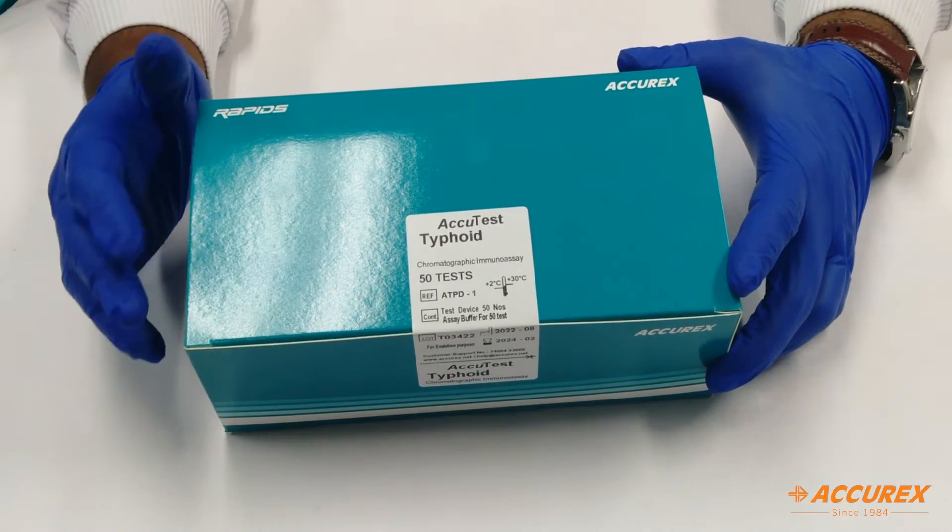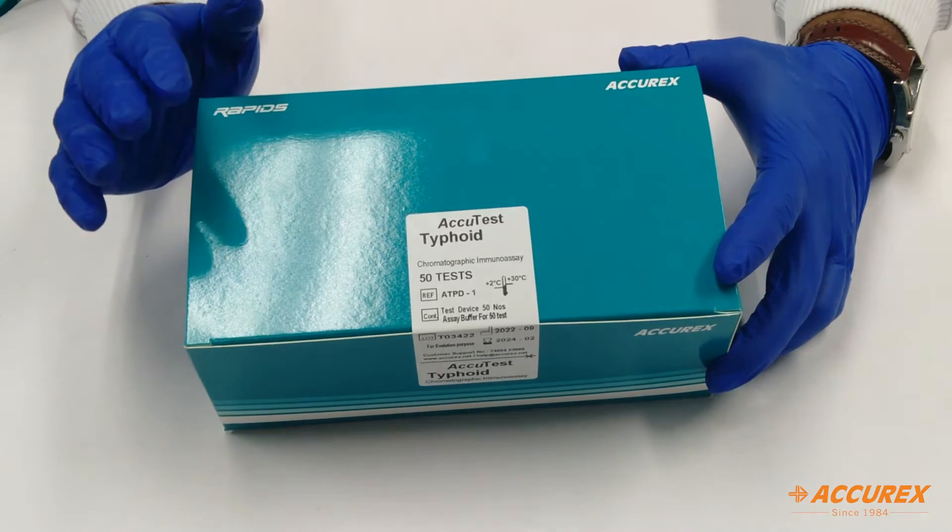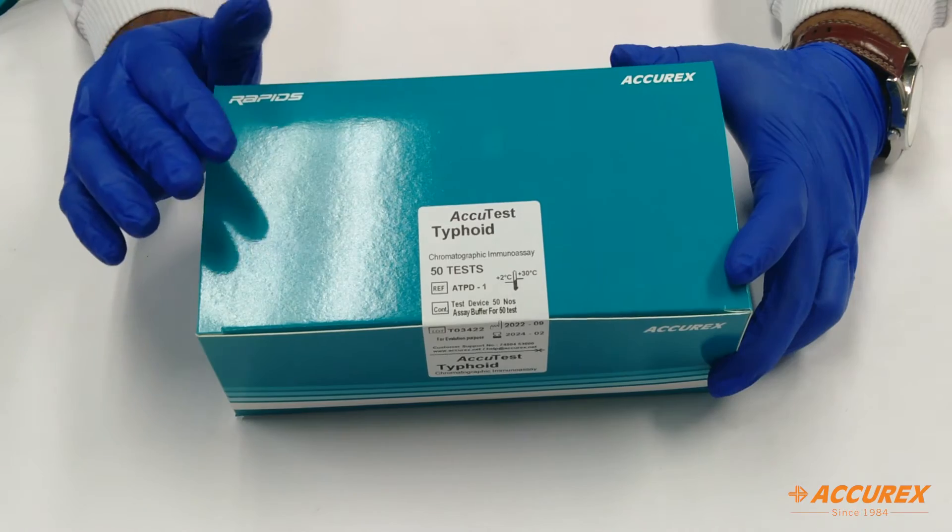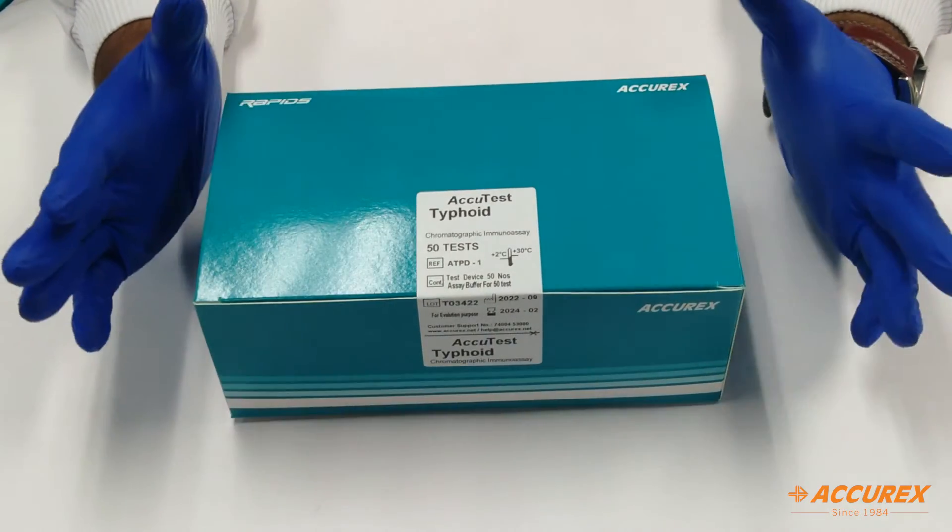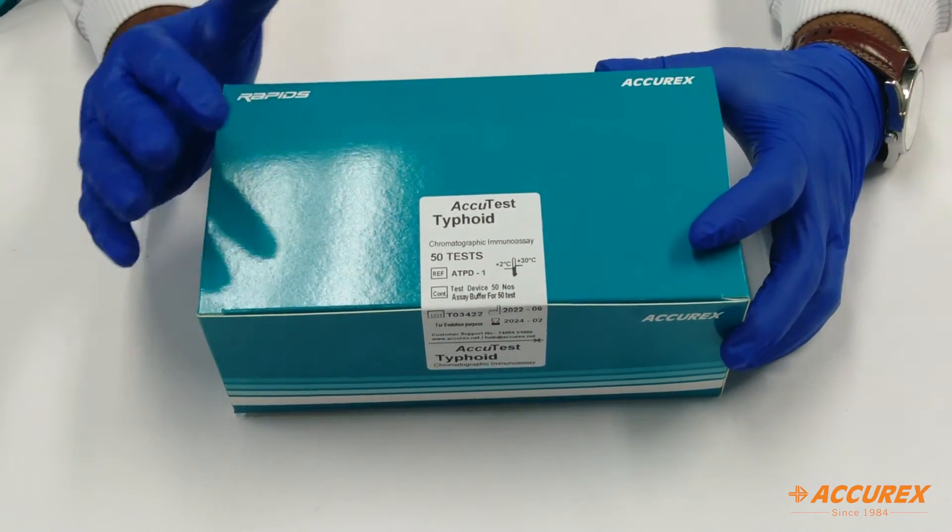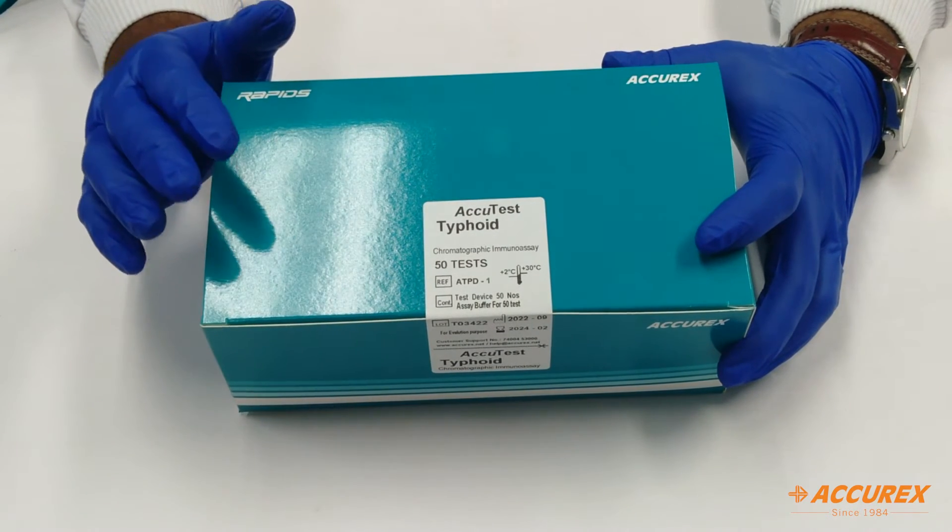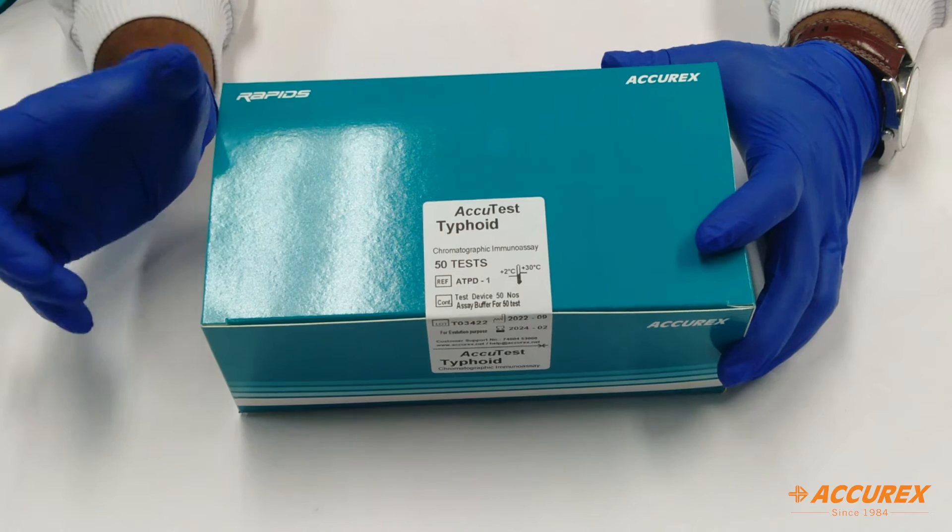How to detect and do the procedure, we will see in the next video. Before that, we need to understand what precautions and handling need to be taken to handle this product. First, we will see the storage. Storage of the kit needs to be at 4 to 30 degrees Celsius, and before testing, the kit card should be kept at room temperature.